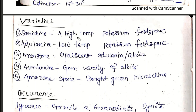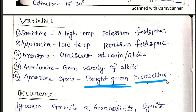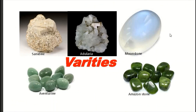Sanidine is high-temperature potassium feldspar. Adularia is low-temperature potassium feldspar. Moonstone, opals, and adularia are varieties. Aventurine is a gem variety of albite. Amazonstone is a bright green variety of Microcline. These include Sanidine, Moonstone, Adularia, Aventurine, and Amazonstone — all used in the gemological and jewelry industry.